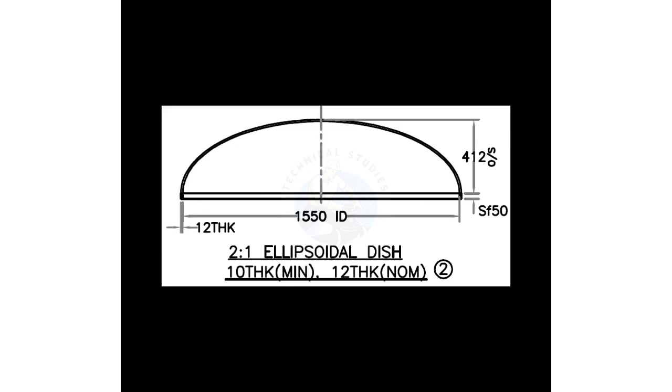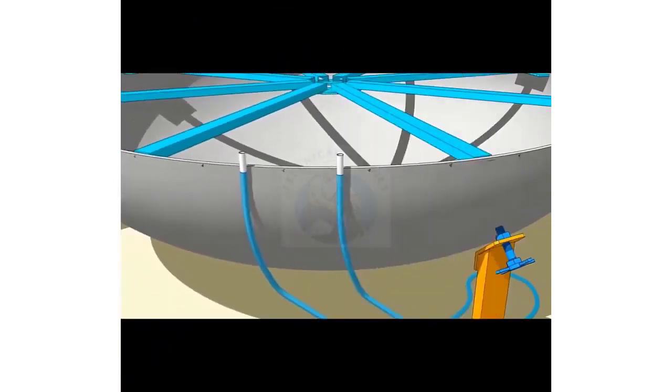Read the drawing for the height of the dish end. Use a flexible, transparent tube filled with water to transfer the level around the dish end.